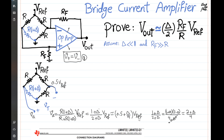So that is the voltage for VA. V-Thevenin is the difference between VA and 0.5·V-ref at these two terminals, so V-Thevenin equals (delta/4)·V-ref. Let's call this equation two.